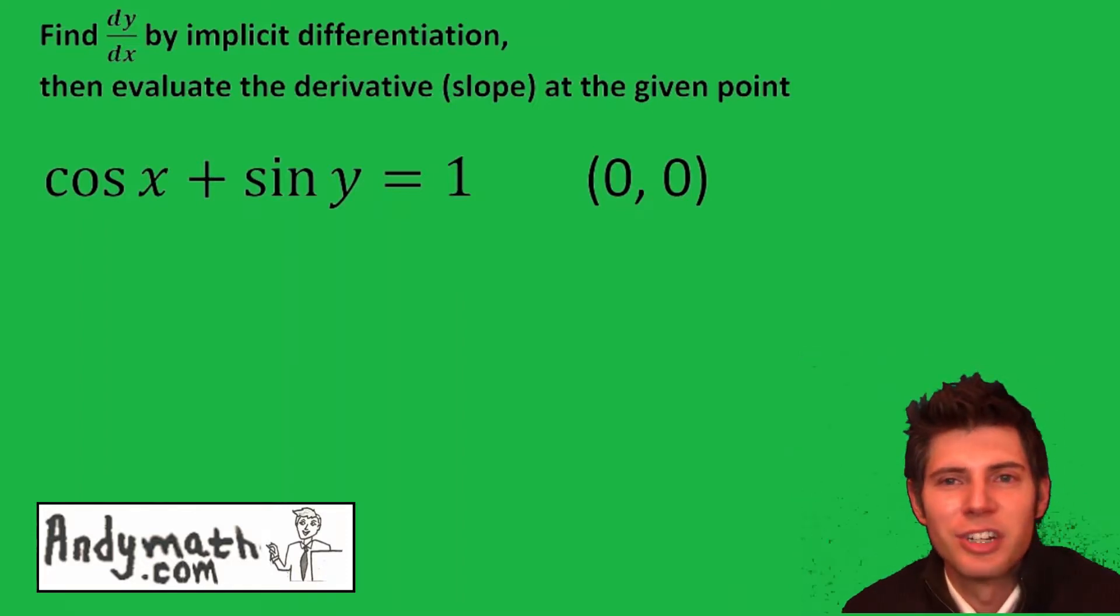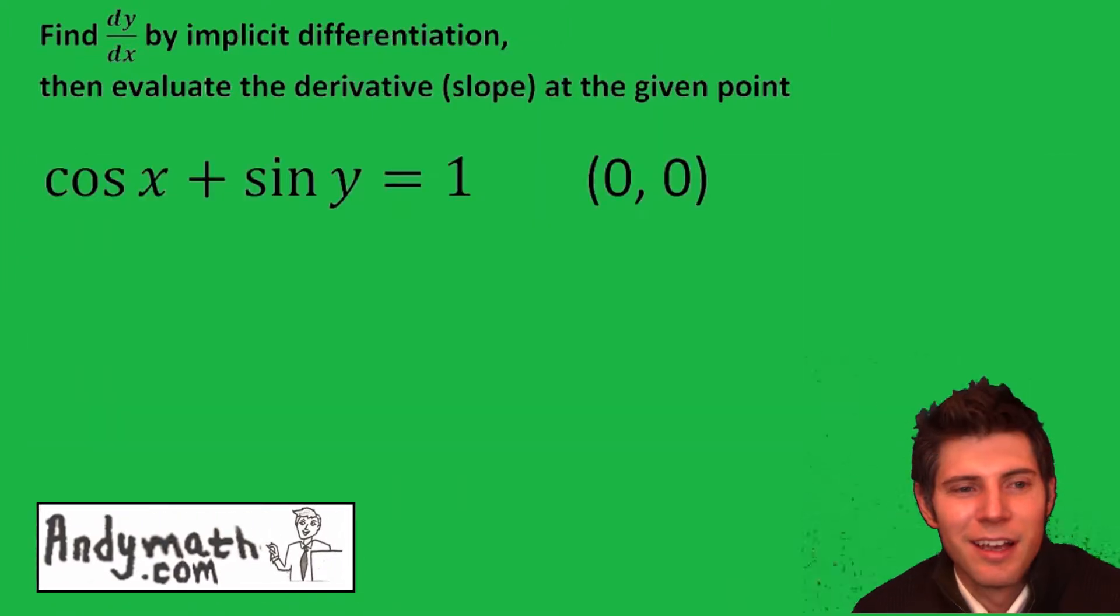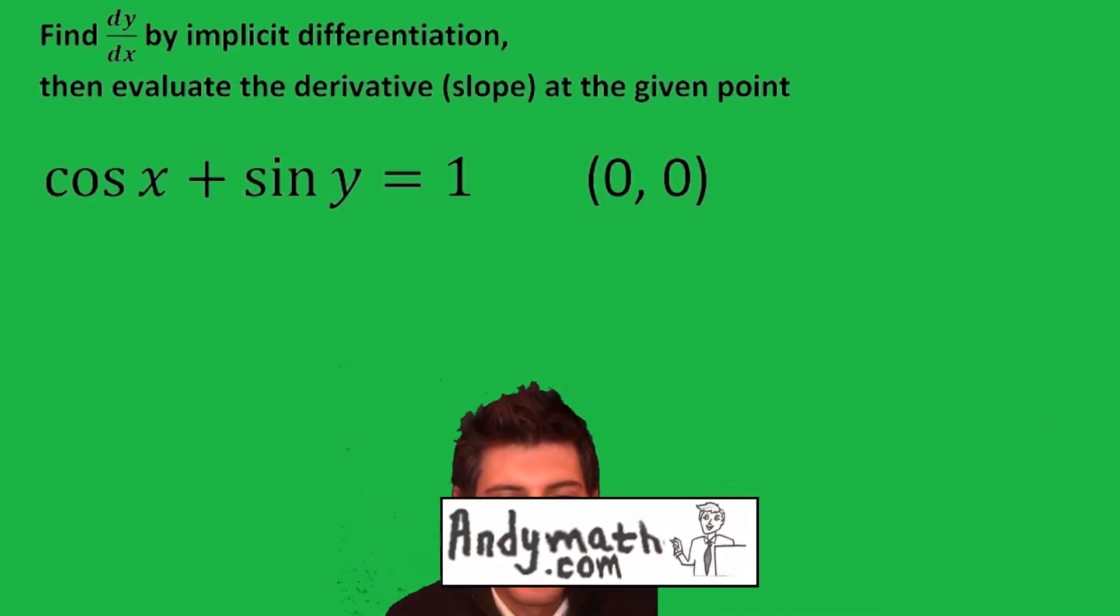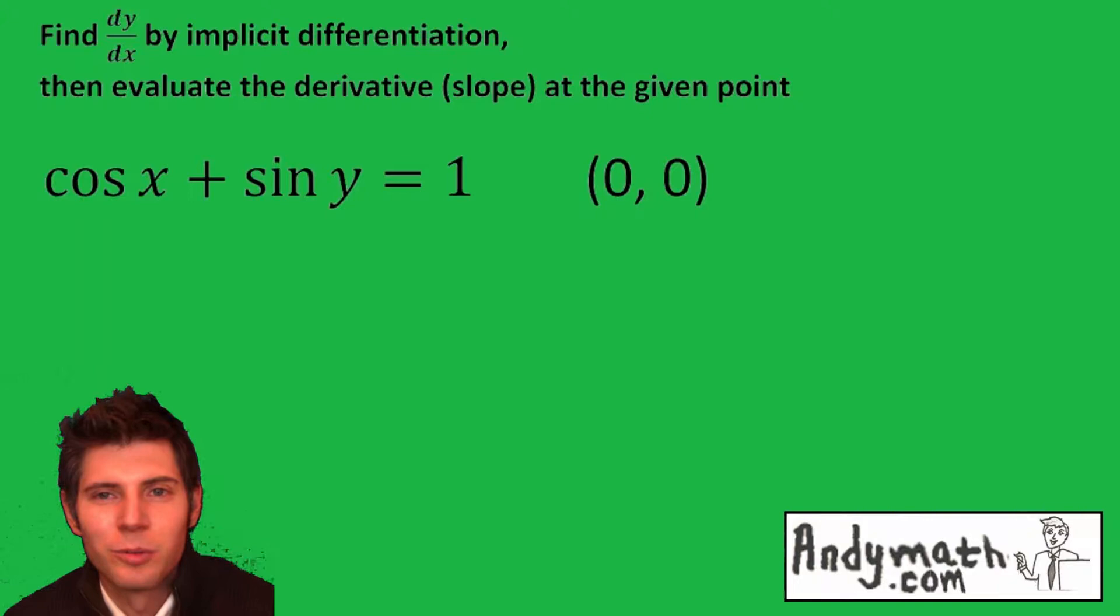Hey guys, welcome to this implicit differentiation video. Andy Math. Find dy/dx by implicit differentiation, then evaluate the derivative, the slope, at the given point of cosine x plus sine y equals 1.